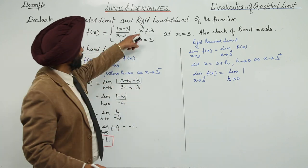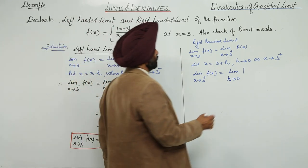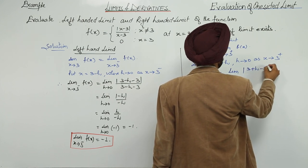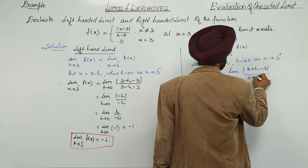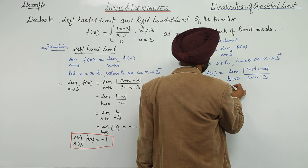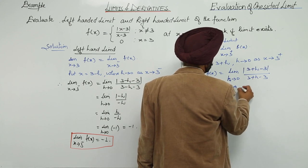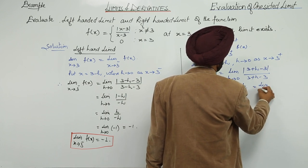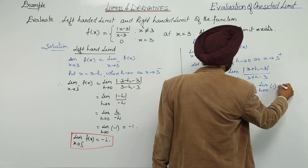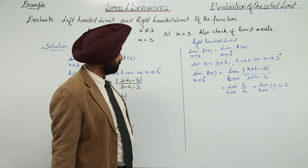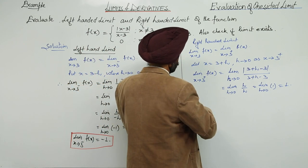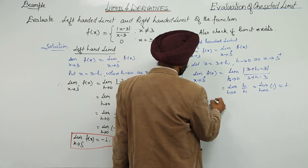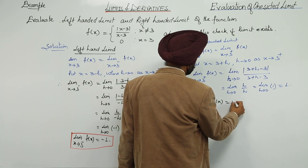Since x is not equal to 3, we go with the same upper part. This becomes (3 plus h minus 3) upon (3 plus h minus 3), which is limit as h approaches 0 of h upon h, equal to limit h approaches 0 of 1, which equals positive 1. So the right-hand limit of f(x) as x approaches 3 equals 1.